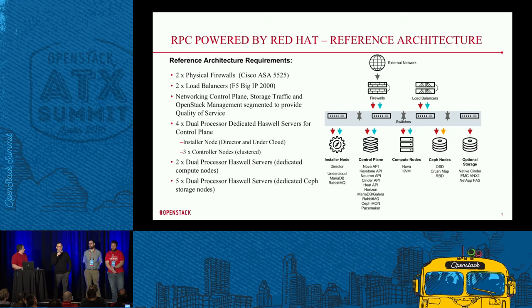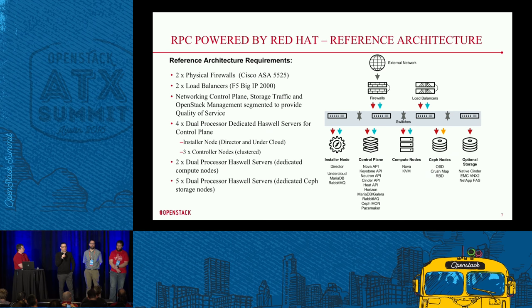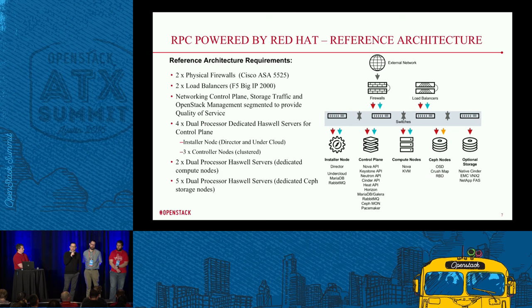The architecture consists of two physical firewalls, which are Cisco ASAs. We use two load balancers, which are F5s, for load balancing the actual APIs themselves. Network control plane, storage traffic, and OpenStack management are all segmented to provide quality of service. We use four dual-core dedicated Haswell servers for the control plane — one of those is the installer node, which runs director and the undercloud components, and the other three are controller nodes, which are clustered. We have two dual-processor Haswell servers which are dedicated compute nodes, and five dual-processor Haswell servers which are dedicated Ceph storage nodes.